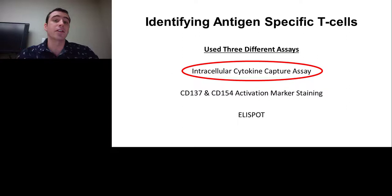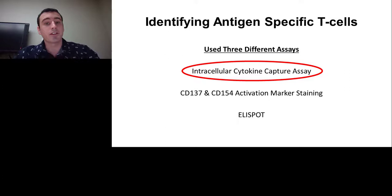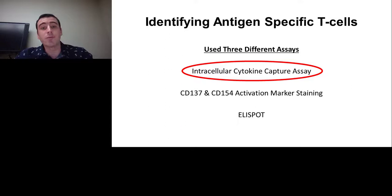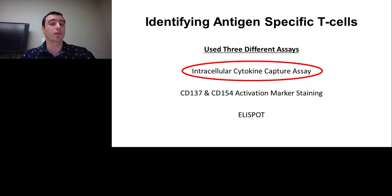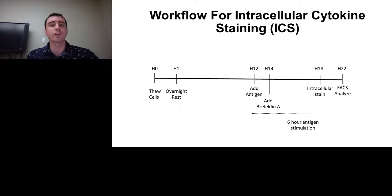We focused on three assays to detect antigen-specific T cells against both Cas9 homologues: intracellular cytokine staining (ICS), detection by activation markers CD137 and CD154, and an EliSpot assay. I'll first talk about results from intracellular cytokine staining.